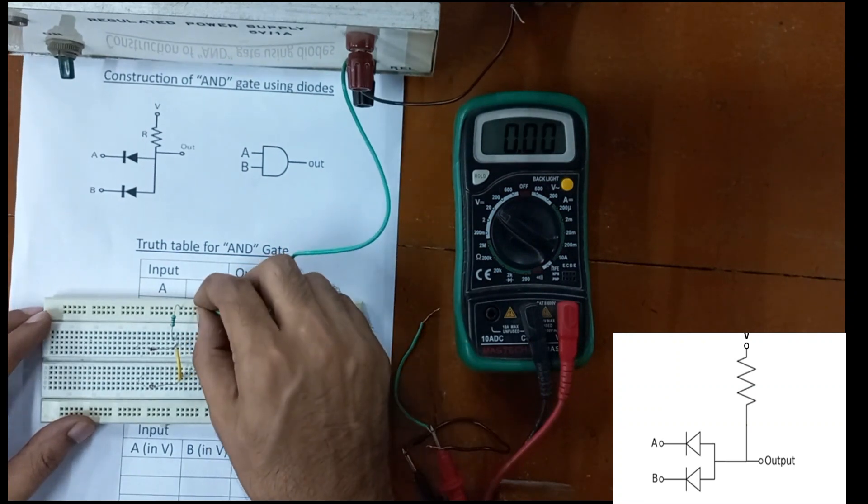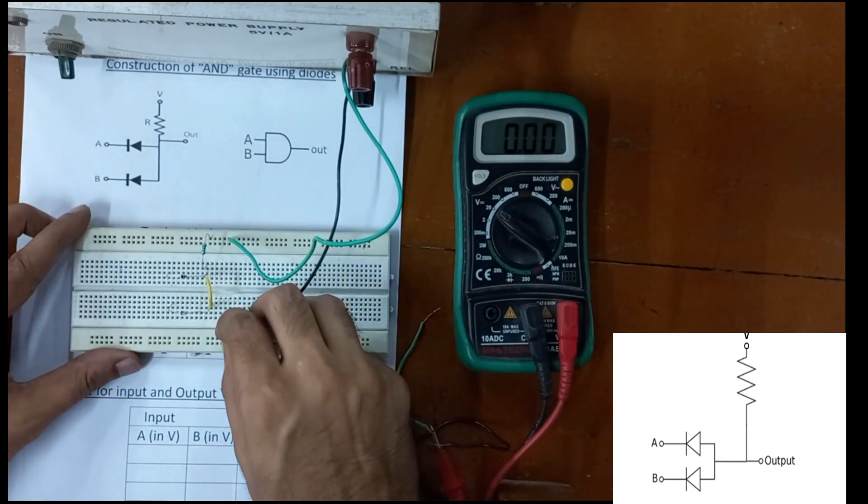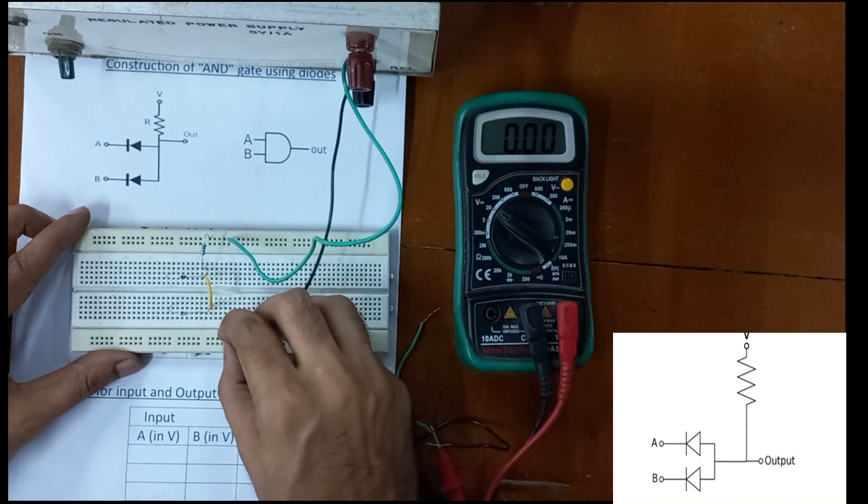Now connect the power supply. The positive terminal is connected to the upper side of the board and the ground terminal is connected to the lower side of the board.